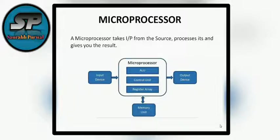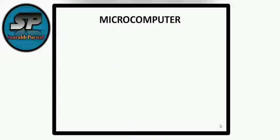As you can see, while working with a processor, we require input devices, output devices, memory units, and many other peripherals. So a processor cannot work standalone — it requires all these components.